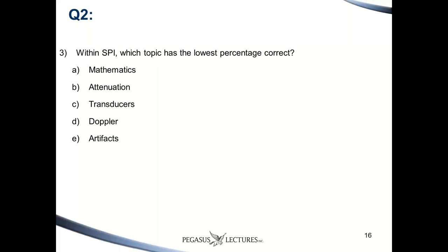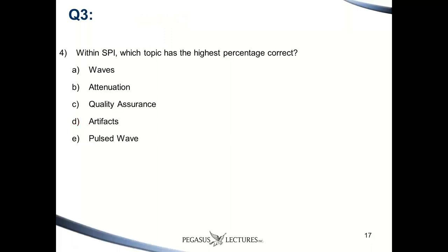Within the SPI, which topic has the lowest percentage correct — mathematics, attenuation, transducers, Doppler, or artifacts? The answer is Doppler. And which topic has the highest? The answer is artifacts. These are things you can see from the tool as you look at national norms — which areas are higher and which are lower.